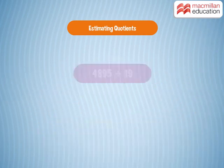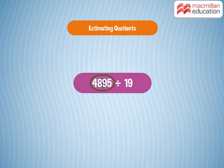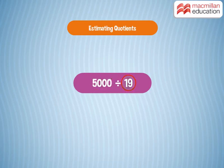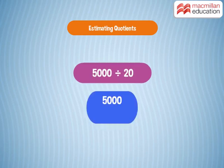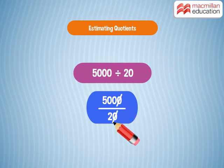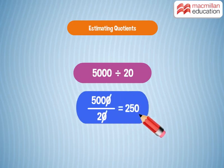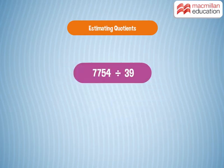Let us take an example: 4,895 divided by 19. Round off 4,895 and you get 5,000. 19 becomes 20 when rounded to its nearest tens. Now divide 5,000 by 20. When you cancel the zeros, it becomes very easy to find the quotient.